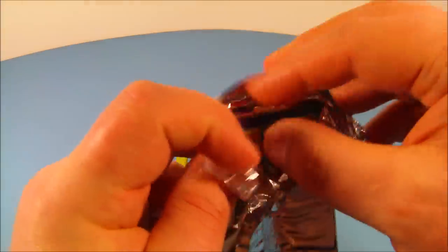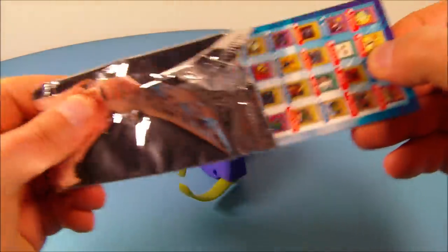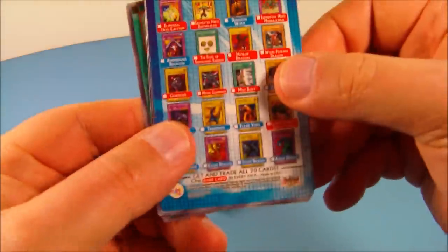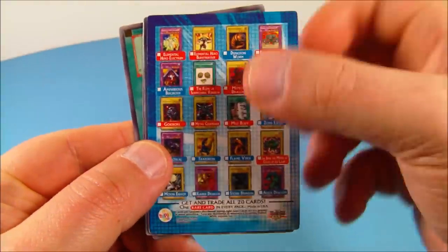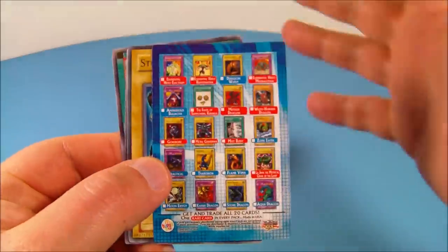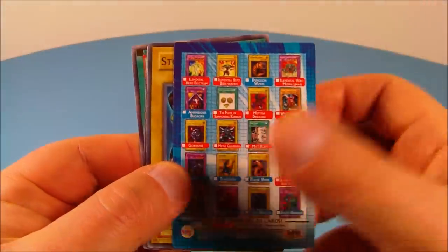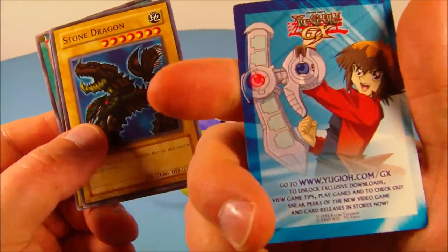And inside here, I already opened it up so I didn't have to struggle with it. And you open this up and inside you find a checklist here. So there's 20 different cards to collect. And you get one rare card in each pack. And it seems like there's a pack of cards with each toy in the set. So here's the checklist. Very cool stuff.